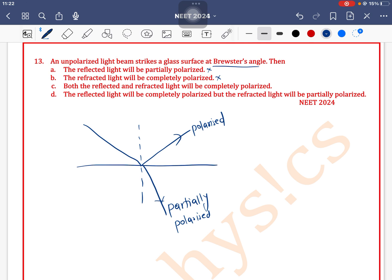Option B, the refracted light will be completely polarized, is incorrect. Option C, both the reflected and refracted light will be completely polarized, is incorrect. Option D, the reflected light will be completely polarized but the refracted light will be partially polarized, is correct. So option D is the correct one.